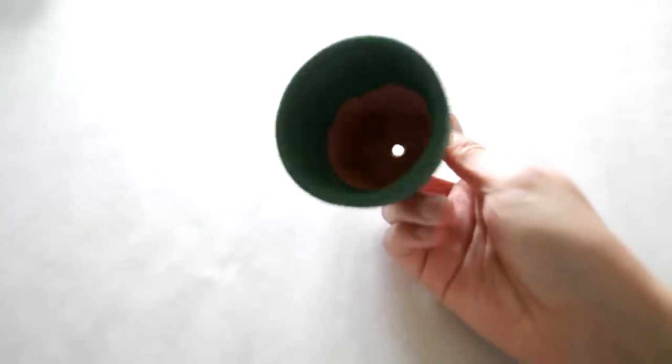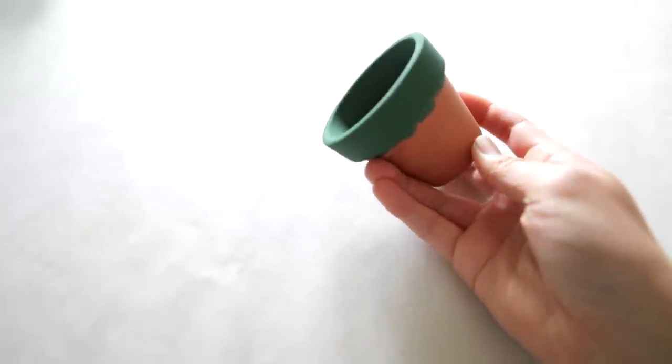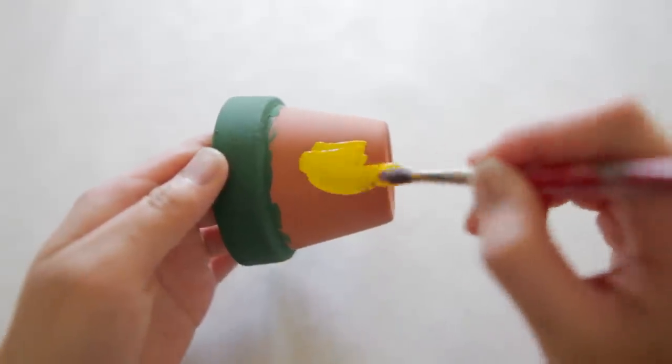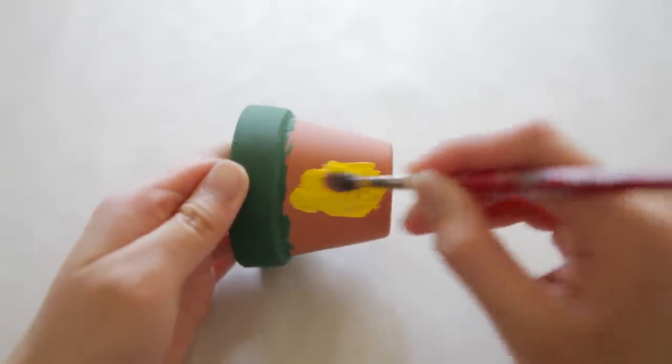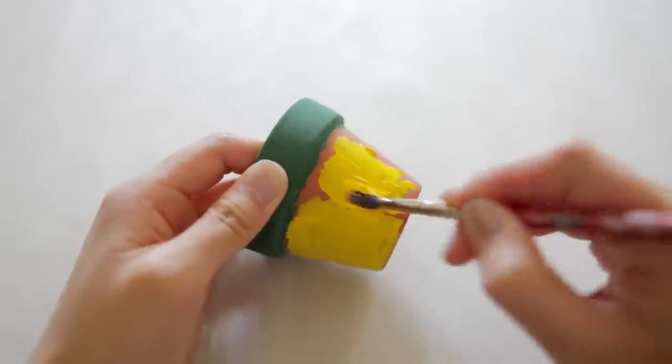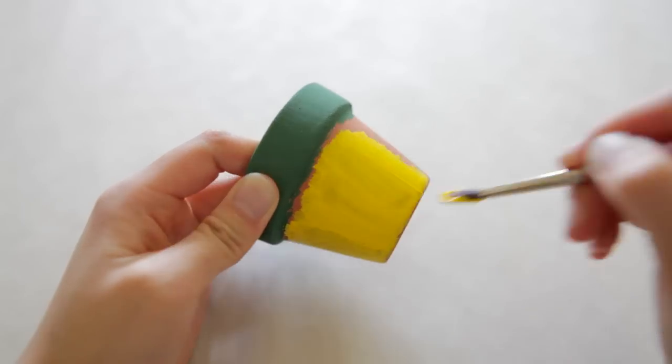For the pineapple, instead of the lime green I just painted the rim of the pot a darker, kind of like a hunter green, and then I went ahead with a bright happy yellow color for the body.